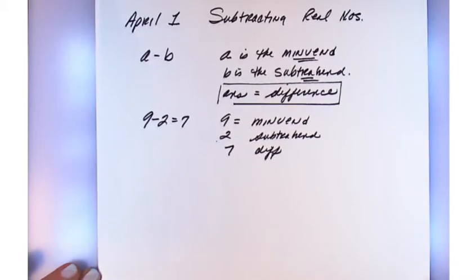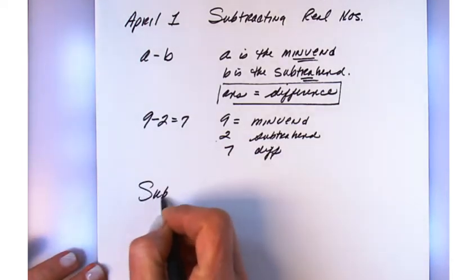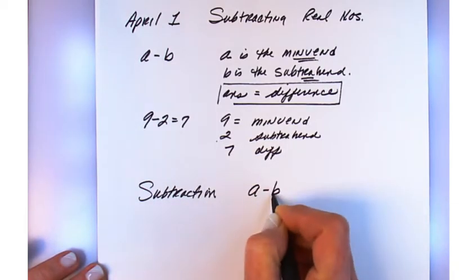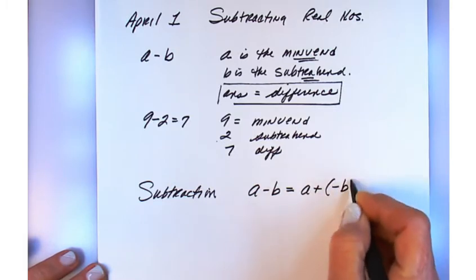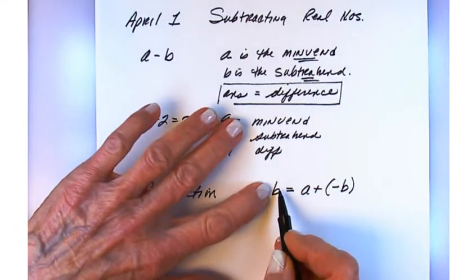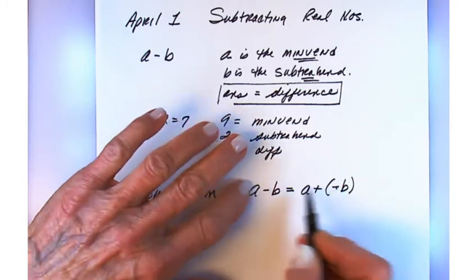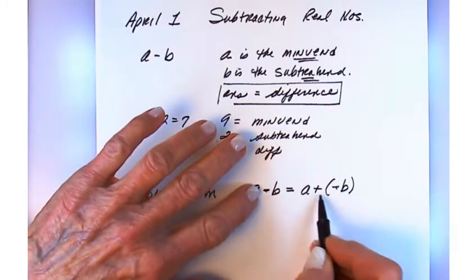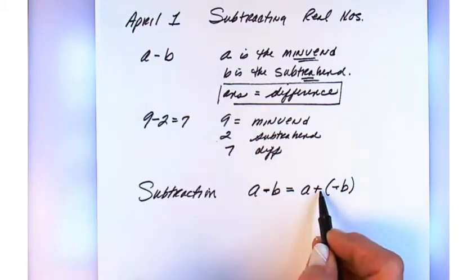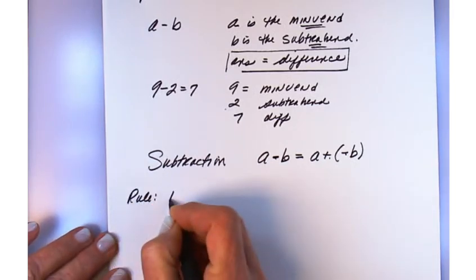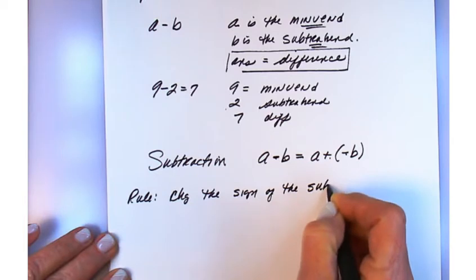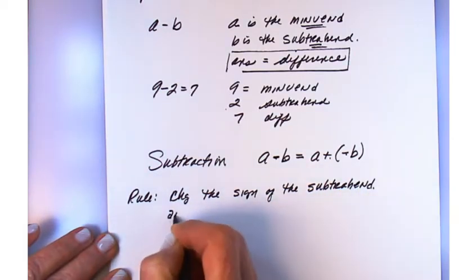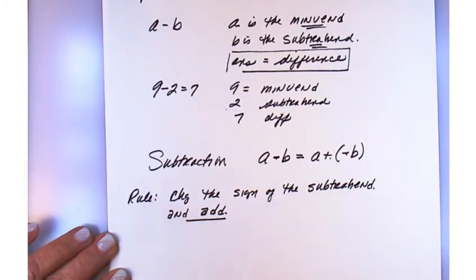Now our world has gotten bigger — we have both positive and negative numbers. When we do subtraction, we rewrite a minus b as an addition problem, because we all know how to add. What you do is change the sign of the subtrahend and then change the operation from subtract to add. The rule is: change the sign of the subtrahend and add.